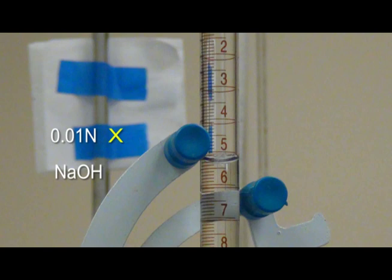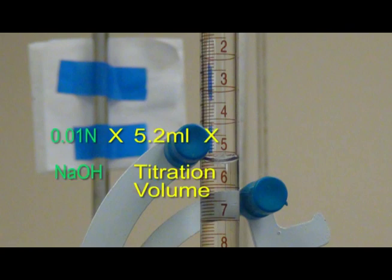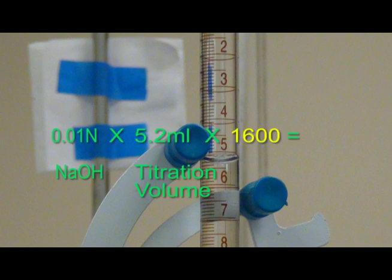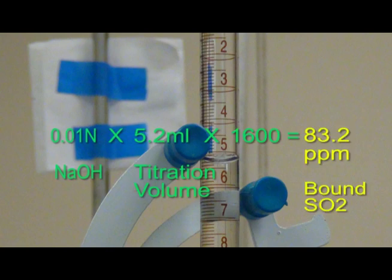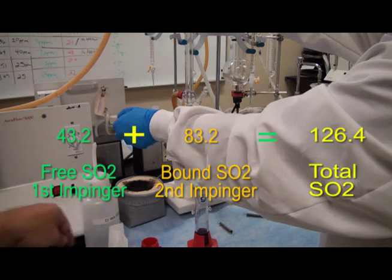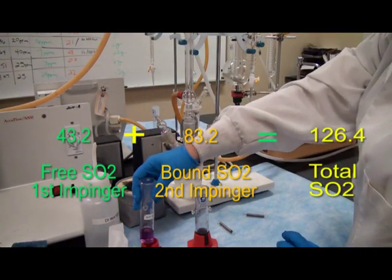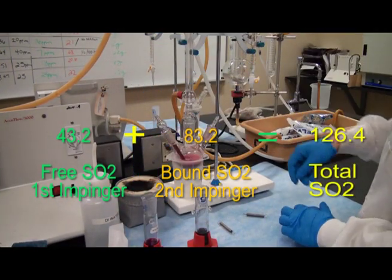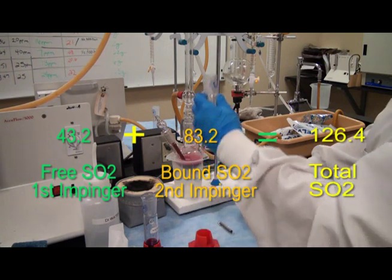To calculate the bound SO2 in the sample, multiply the concentration of sodium hydroxide, in this case 0.01, times the mls dispensed from the burette and multiply the result by 1600. Add the free SO2 value from the first impinger to the bound SO2 value from the second impinger to obtain the total SO2 level. The result will be total SO2 in parts per million.